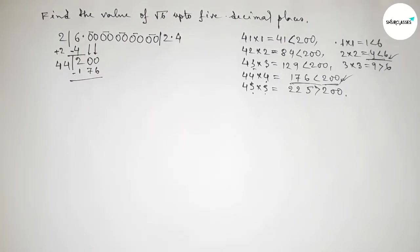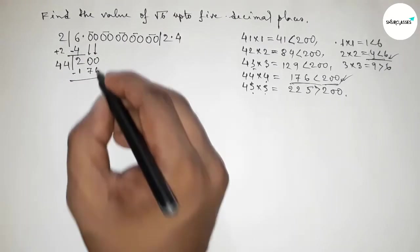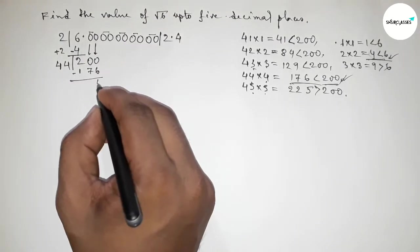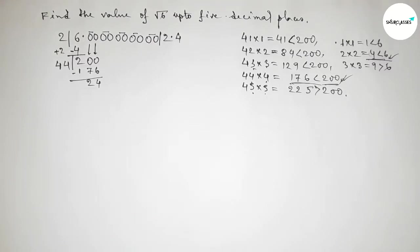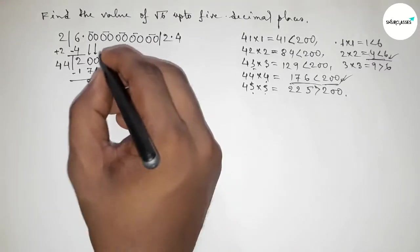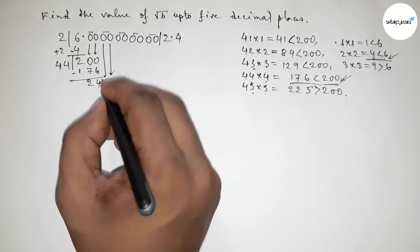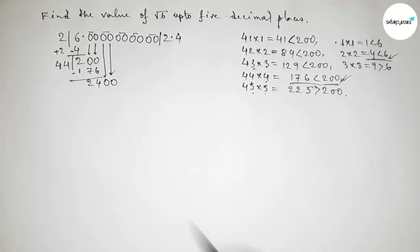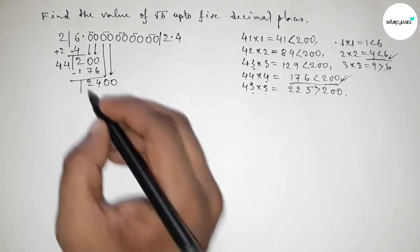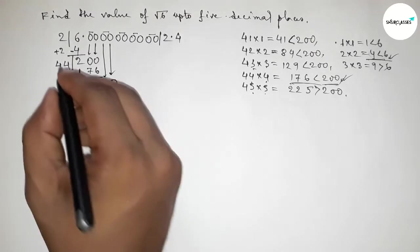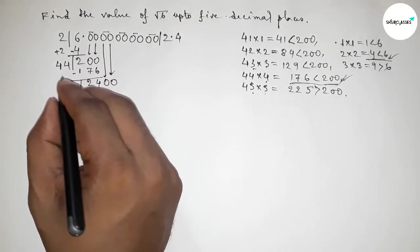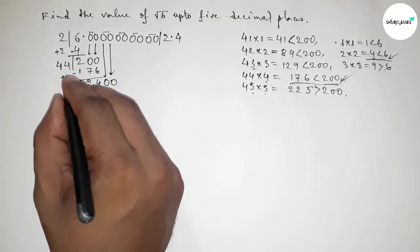Subtracting: 200−176=24. Bring down the next pair of zeros. Draw the division line. Now the last digit is 4, so we add 4+4=8, giving 484.